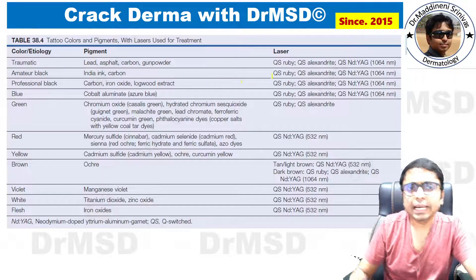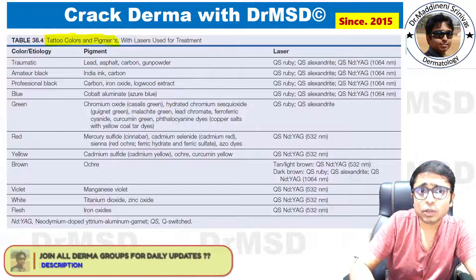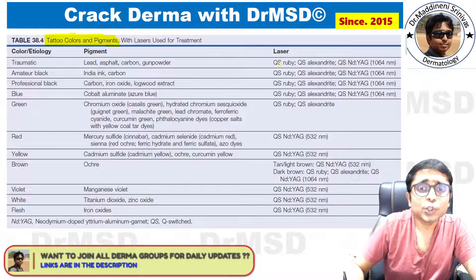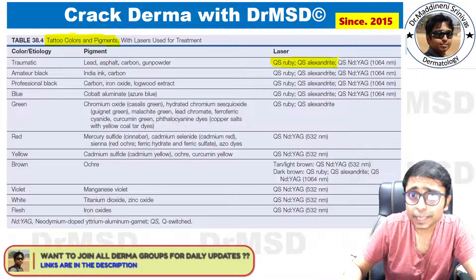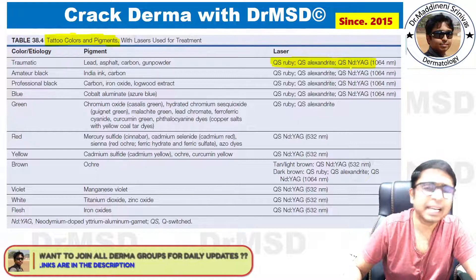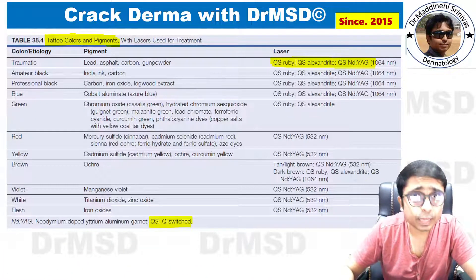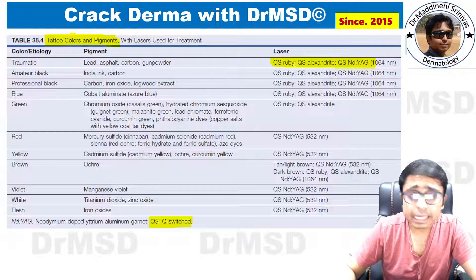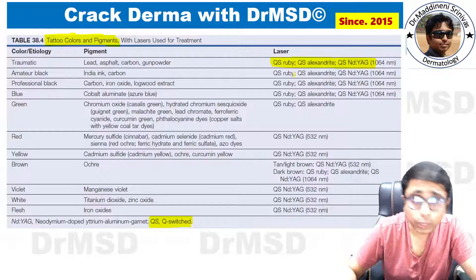This slide tells you the lasers used in tattoo removal. Tattoo is also a type of pigment, so the lasers used are Q-switch Ruby, Q-switch Alexandrite, and Q-switch Nd:YAG. Just remember Ruby, Alexandrite, and Nd:YAG are used for pigmentary disorders and also for pigment removal such as tattoo removal.